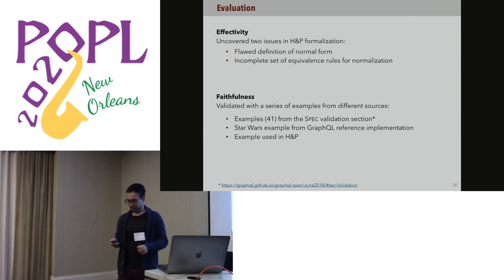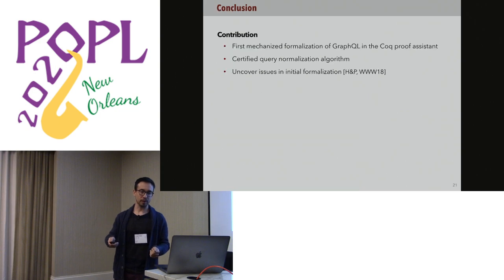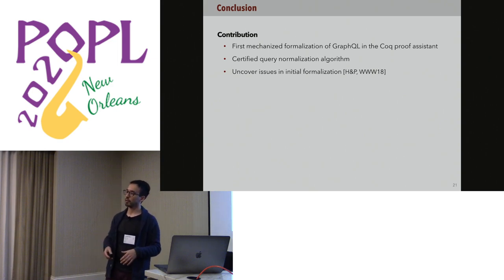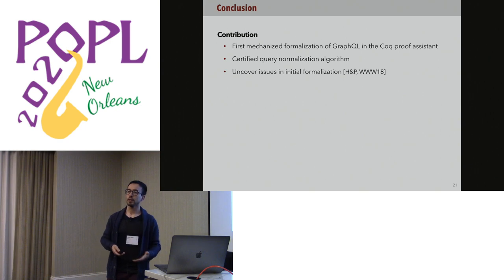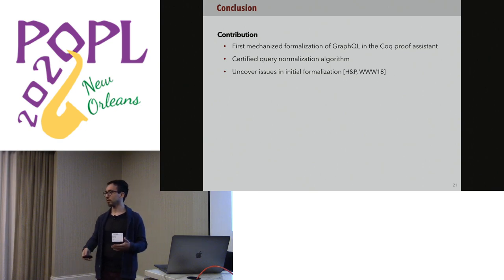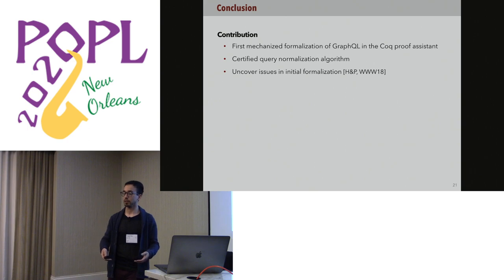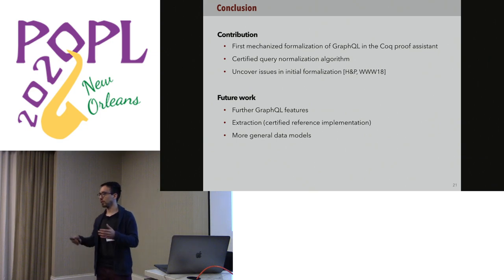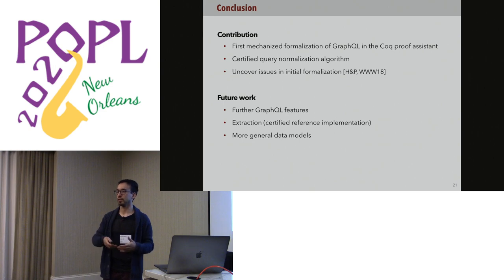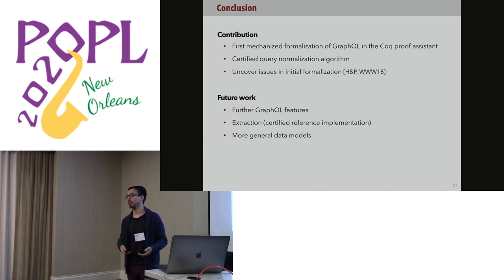To conclude: our work developed the first mechanized formalization of GraphQL in Coq, which we hope can serve as a formal baseline to study the language. We defined the normalization algorithm that was missing from Hartig and Perez's formalization, and we uncovered some minor issues from their initial formalization. Future work includes adding more features of GraphQL beyond the current core, extracting to OCaml or Haskell for a certified reference implementation to compare against the JavaScript library, and exploring more general data models with semantics.